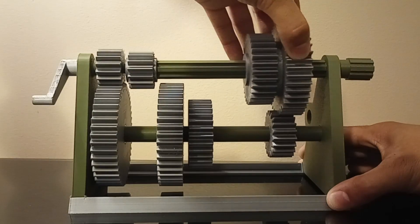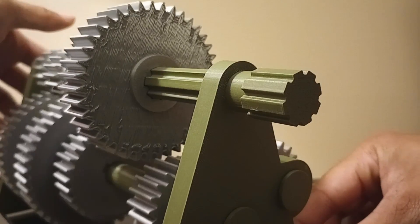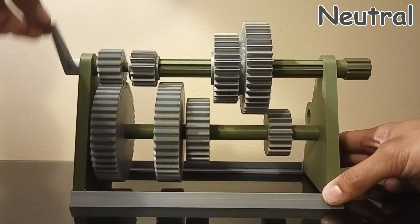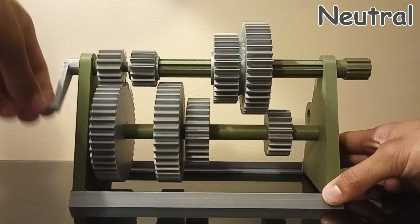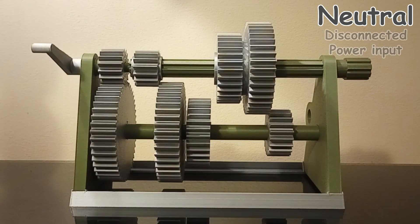So what if none of the output gears are meshing with the counter gears? Well then the system would be in neutral. And being in neutral means that although the system may be supplied with power, the movement of the main shaft doesn't depend on it.